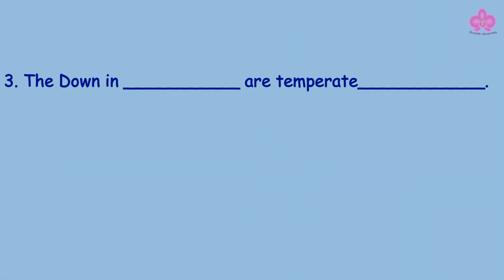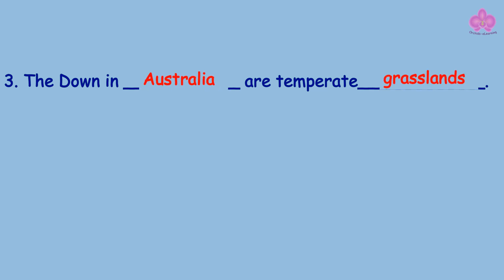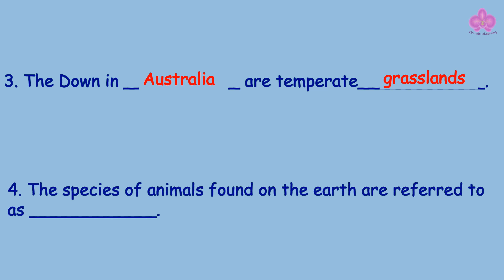Question 7: The downs in — are temperate grasslands. Answer: Australia. Question 8: The species of animals found on the earth are referred to as — Answer: Fauna.